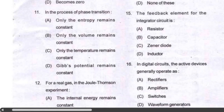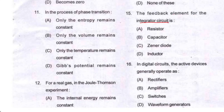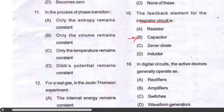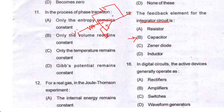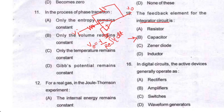Question number fifteen: the feedback element for an integrator circuit is a capacitor. The integrator circuit can be defined with a resistor at the input and a capacitor as the negative feedback element connected to the output. The output expression for an integrator circuit is V_out = −(1/RC)∫V_in dt. For a logarithmic amplifier, the feedback element is a diode.